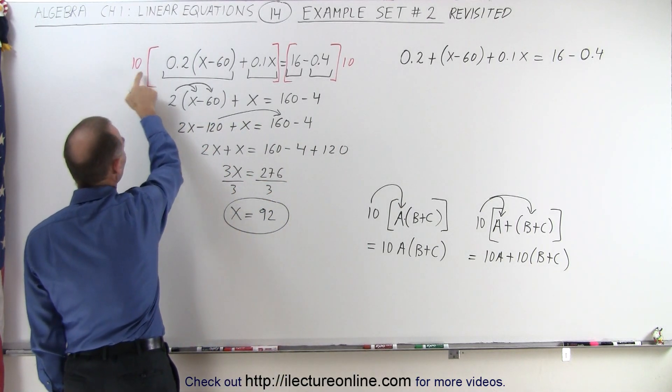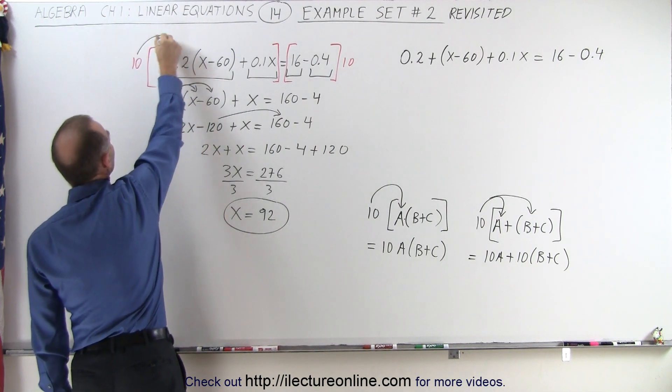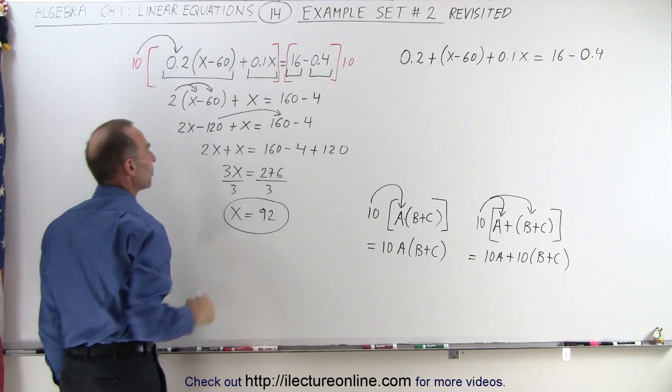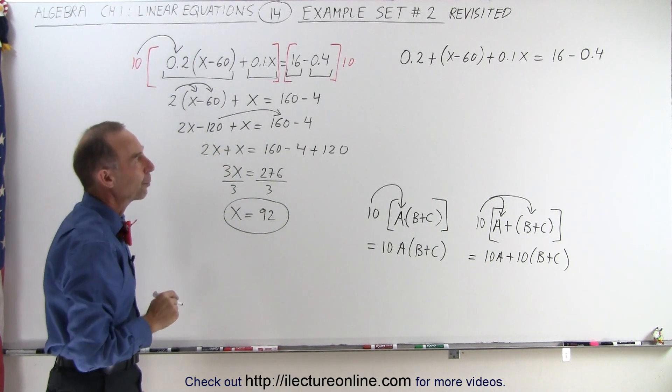So here when we multiply the 10 times 0.2 times x minus 60 we only multiply the 10 times 0.2 and not the x minus 60. So now let's see how we would solve that problem right there.